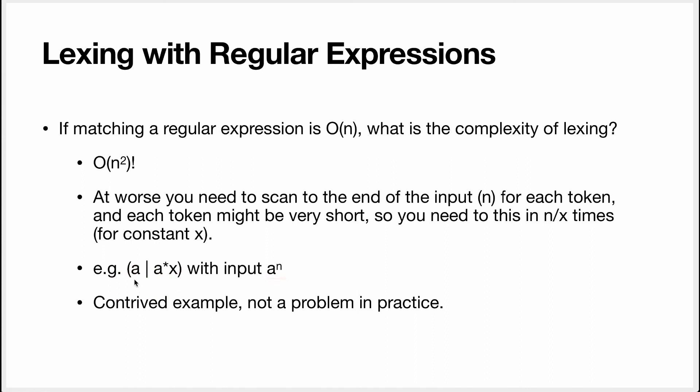There's no x there, so we always are going to emit the a token, n times in fact. But for each of them, we need to go look to the end of the input to see if there's not an x there.